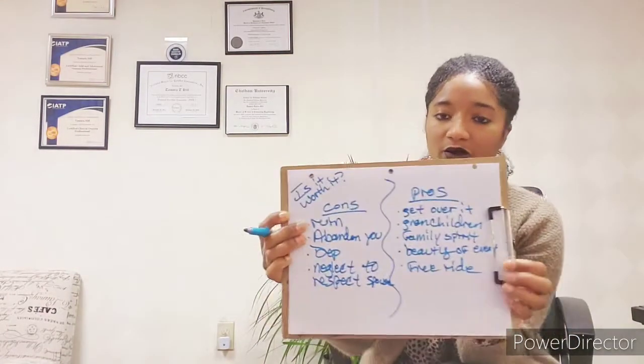The cons might be: he's going to ruin everything. Another con is he'll never talk to you again — he will abandon you. He could get depressed. He could neglect to respect your spouse. So you want to start writing all this stuff down.